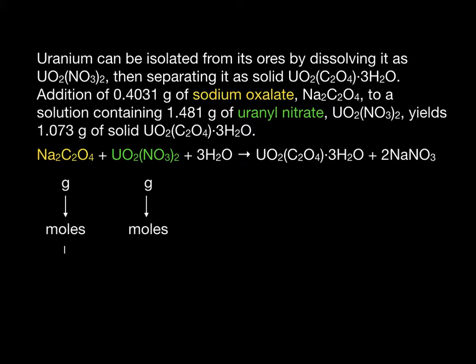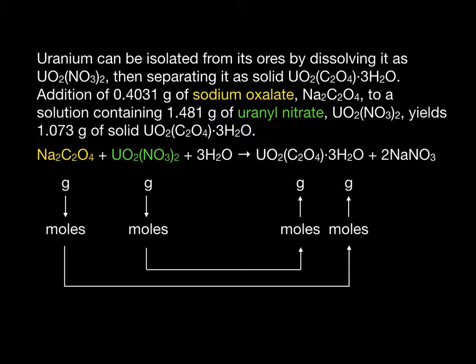From each of these moles, we will then calculate how many moles of product can be formed. Then we will convert to grams of the product, and the lesser of the two masses will be the theoretical yield, and it will help us identify which of the reactants is the limiting reactant.